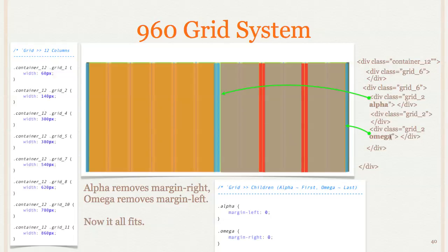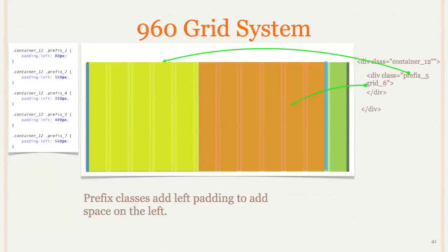So use those when you have a grid inside of a grid. You have a grid class here, and then when I have something inside of it that also has a grid applied to it, then I need to add alpha to the first one and omega to the last one. And if there's only one for some reason I wanted to have a grid 6 within a grid 6, I can add both alpha and omega to that same element. There's no problem with that.